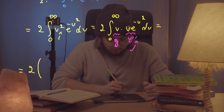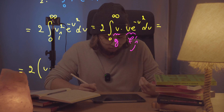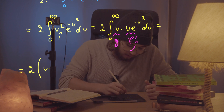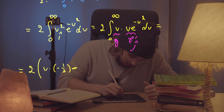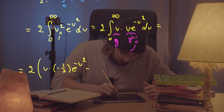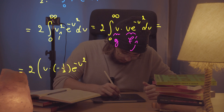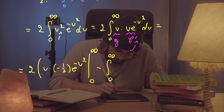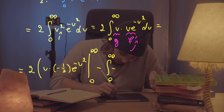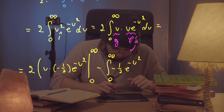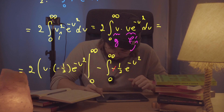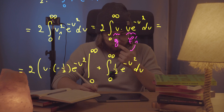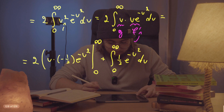So that gives us 2 times: u multiplied by the antiderivative of u e to the negative u squared, which is negative one half times e to the negative u squared — evaluated from zero to infinity — minus the integral from zero to infinity of negative one half e to the negative u squared. Bringing the negative sign in front gives us plus one half times the integral of e to the negative u squared, du.